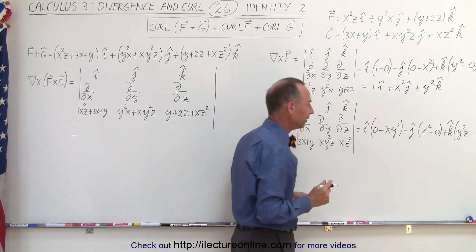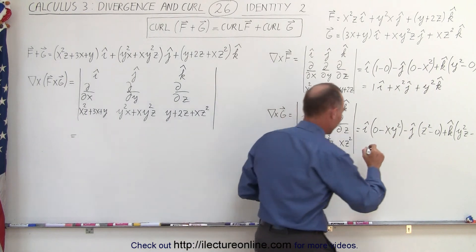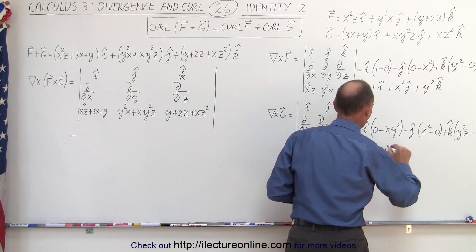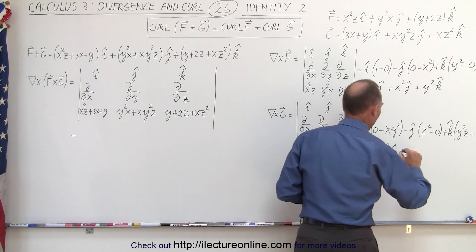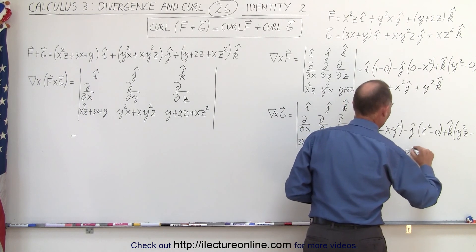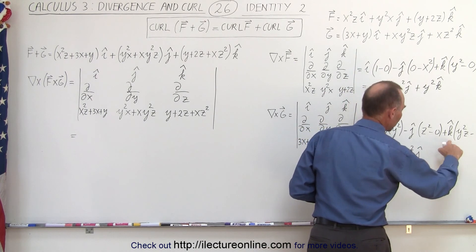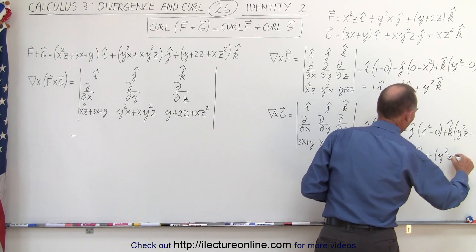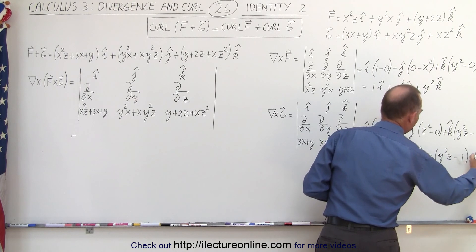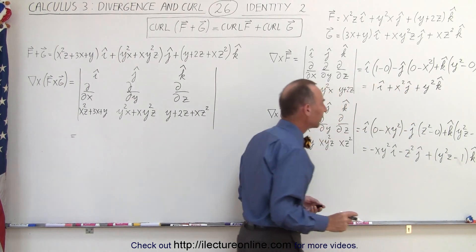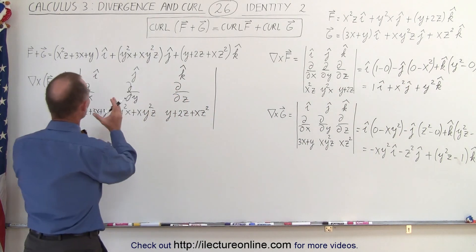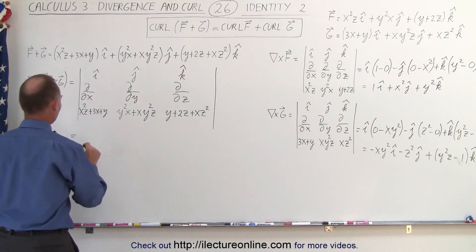We can simplify that a little bit. This would be minus xy squared in the i direction, minus z squared in the j direction, and we have plus y squared z minus 1 in the k direction. So now we've found the curl of each individual vector field. Now let's find the curl of the sum of the vector fields.